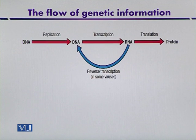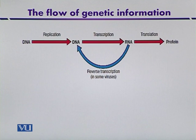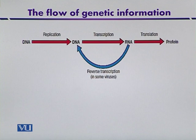From DNA, information flows to RNA by the process called transcription. Information can also flow back from RNA to DNA, a process very common in some viruses, known as reverse transcription.